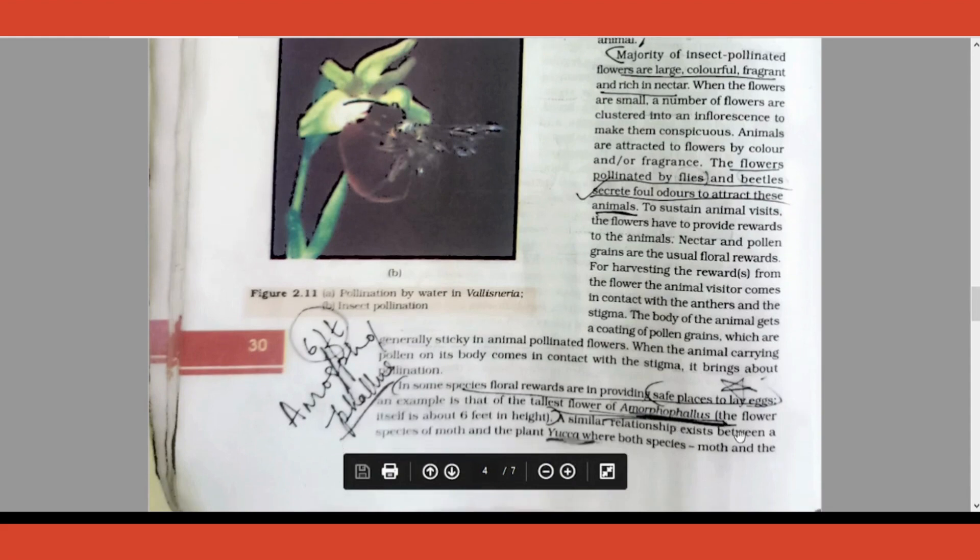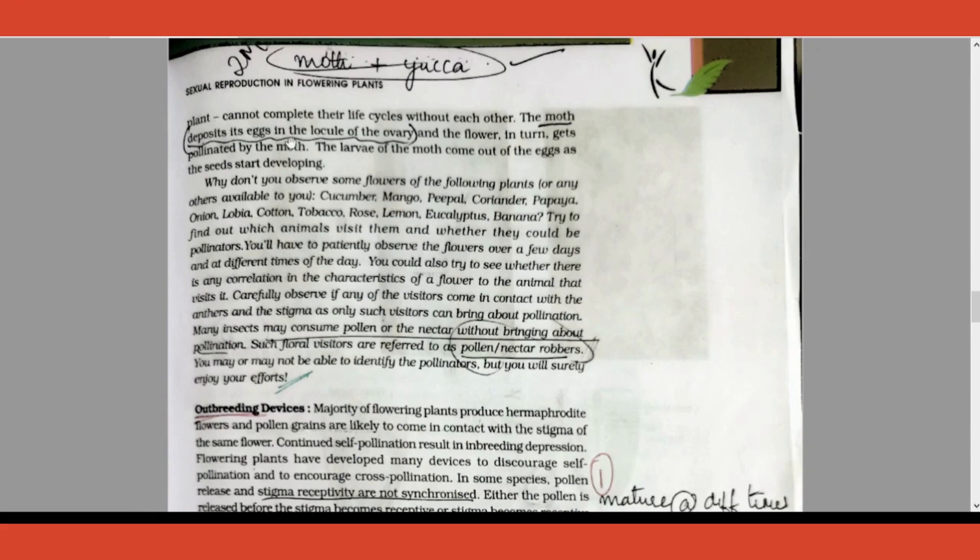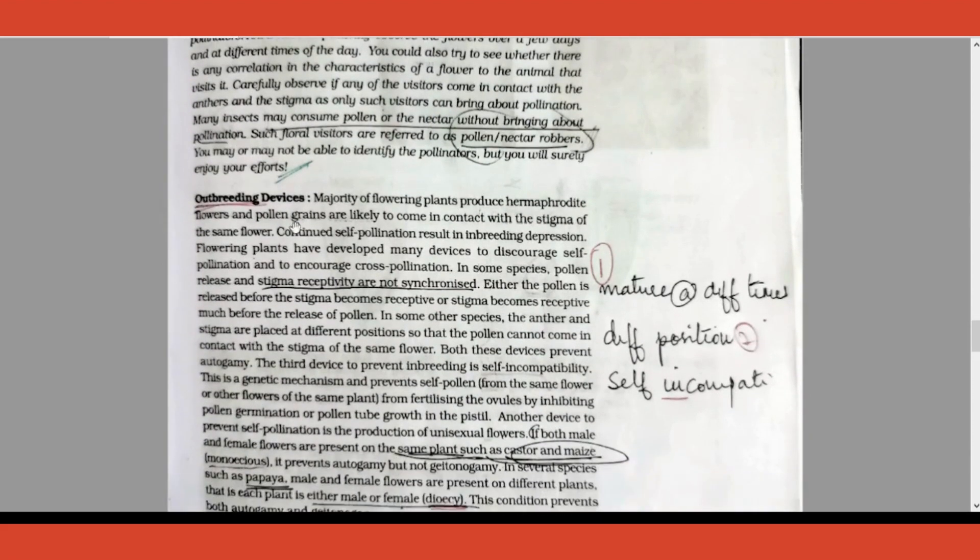Important question: what is the relationship between moth and yucca? Underline it properly. Moth deposits its egg in the locule of ovary. The reward that the yucca plant is giving is this: moth gets to deposit its egg in the compartment of the ovary. And what does yucca plant get? The moth will instead pollinate the flower.